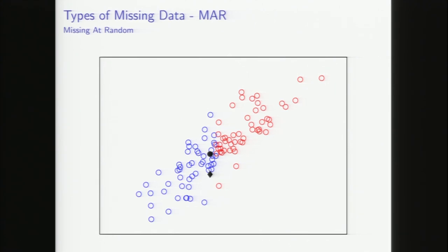Luckily, with a bit of clever thinking, we can get reasonable results using things like the EM algorithm or variational inference. We can treat all the missing values as latent variables and then iteratively update our estimates of what those missing values are, ending up with a theoretically unbiased estimate of what those values could have been. So we're not totally screwed if we have missing-at-random data.